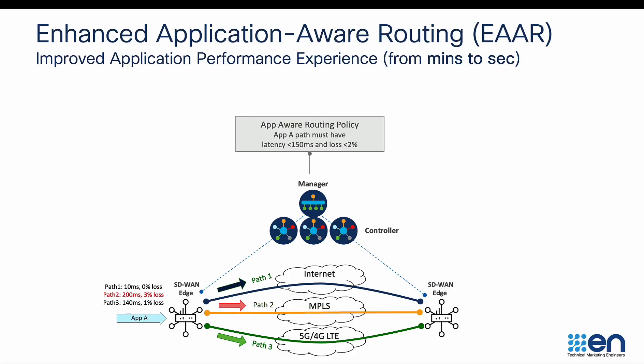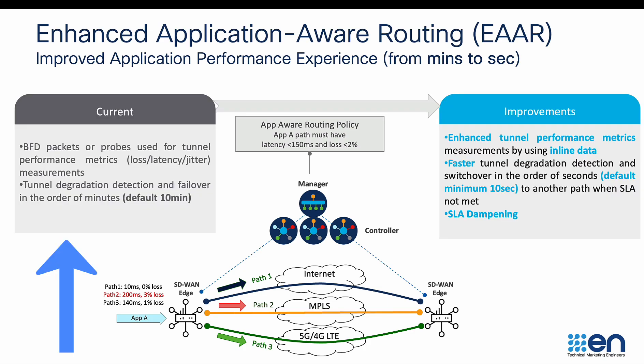Application aware routing tracks in real time the path quality of the data plane tunnels between SD-WAN edge routers. Path performance metrics such as loss, latency, and jitter are measured using BFD. However, if there are soft failures on the WAN circuit, the tunnel degradation detection and switchover takes several minutes.